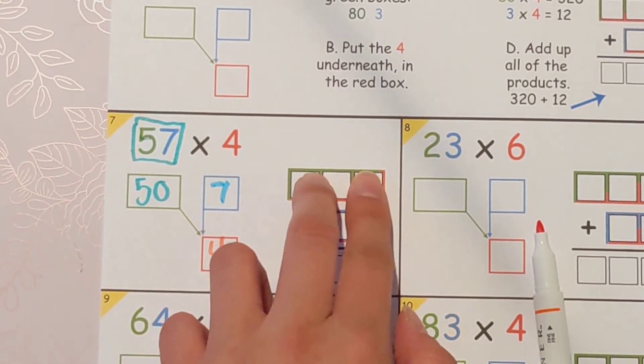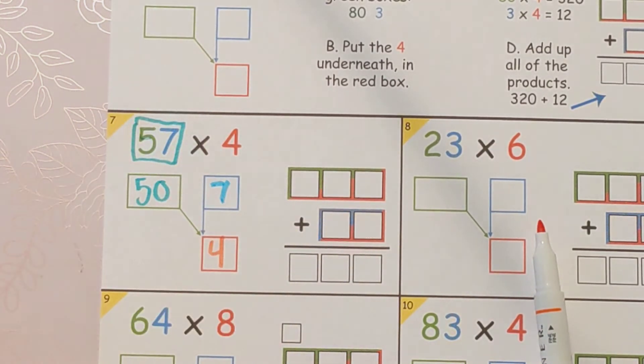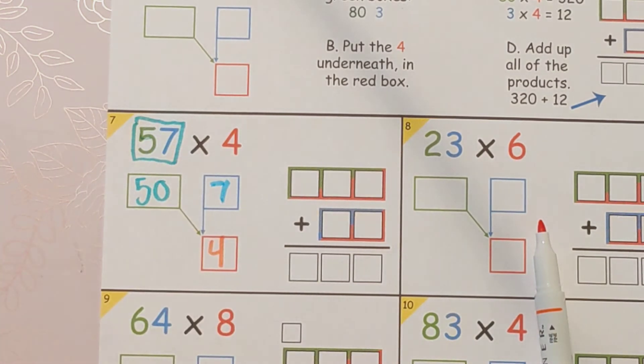50 times 4 you'll put here. 7 times 4 you'll put here and these boxes have colors to help match and then you're just going to add it all together at the end.